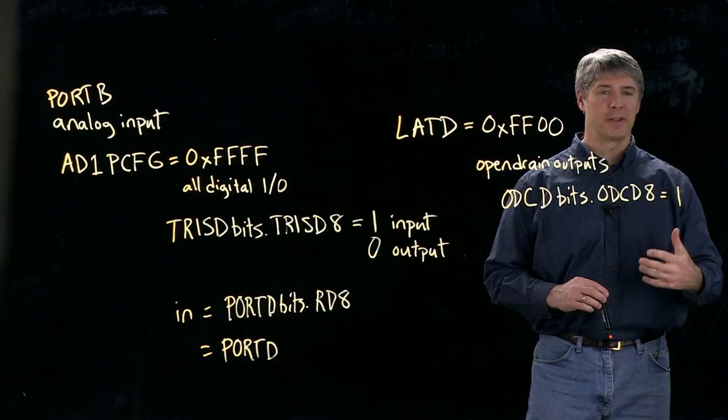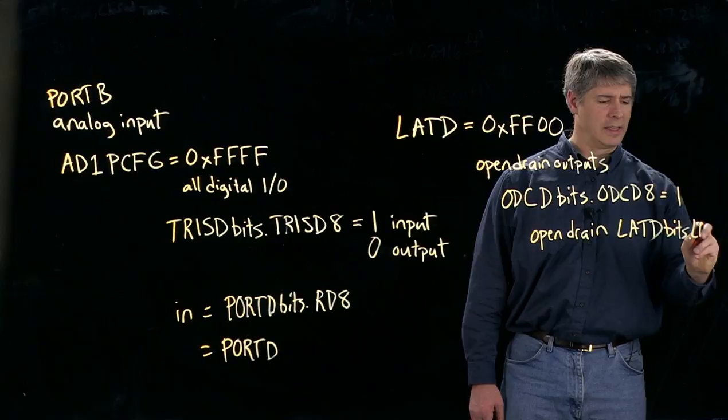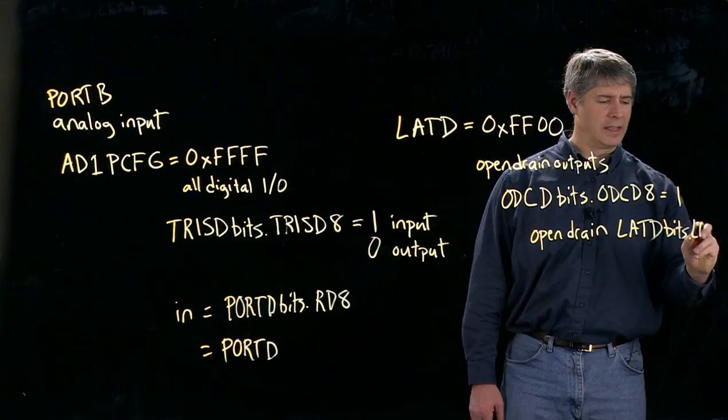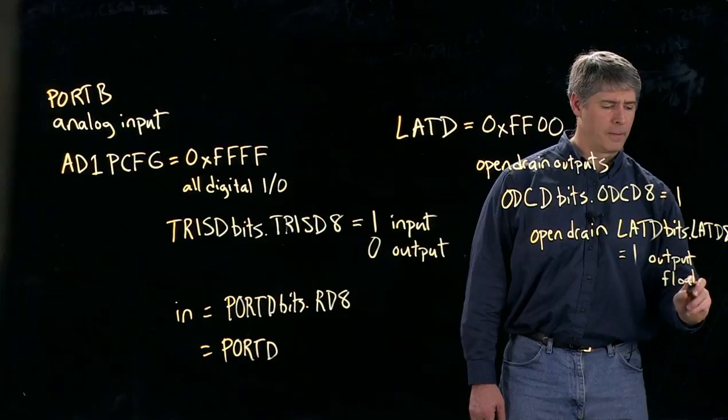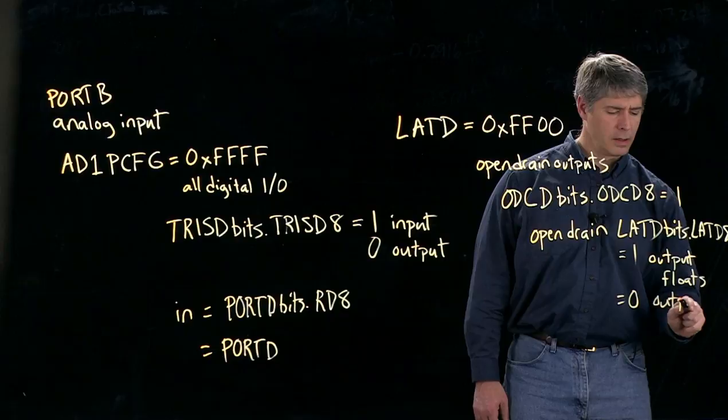Now, if it's open drain, then if we write with LATD a value of, so this case, LATD bits dot LATD8 is equal to 1, then that means the output floats, and we'll explain that in just a moment. And 0 means the output is equal to 0 volts.